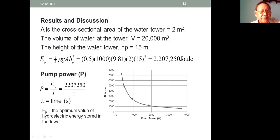Results and discussion. The cross-sectional area of the water tower is 2 meters squared. The volume of water at the tower is 20,000 meters cubed. The height of the water tower HP is 15 meters. So Ep = 1/2 ρGA HP².